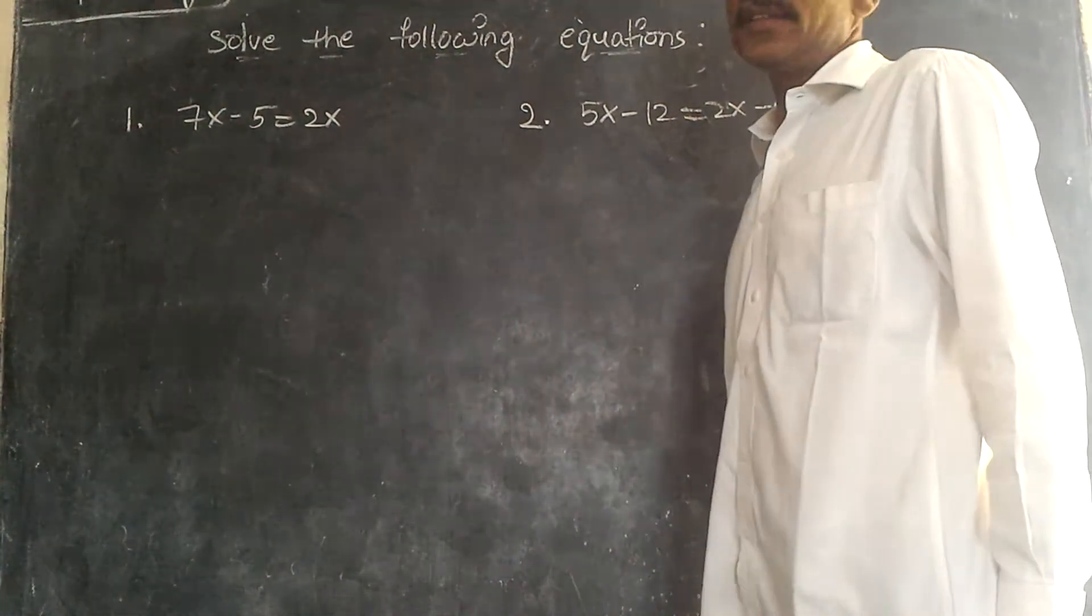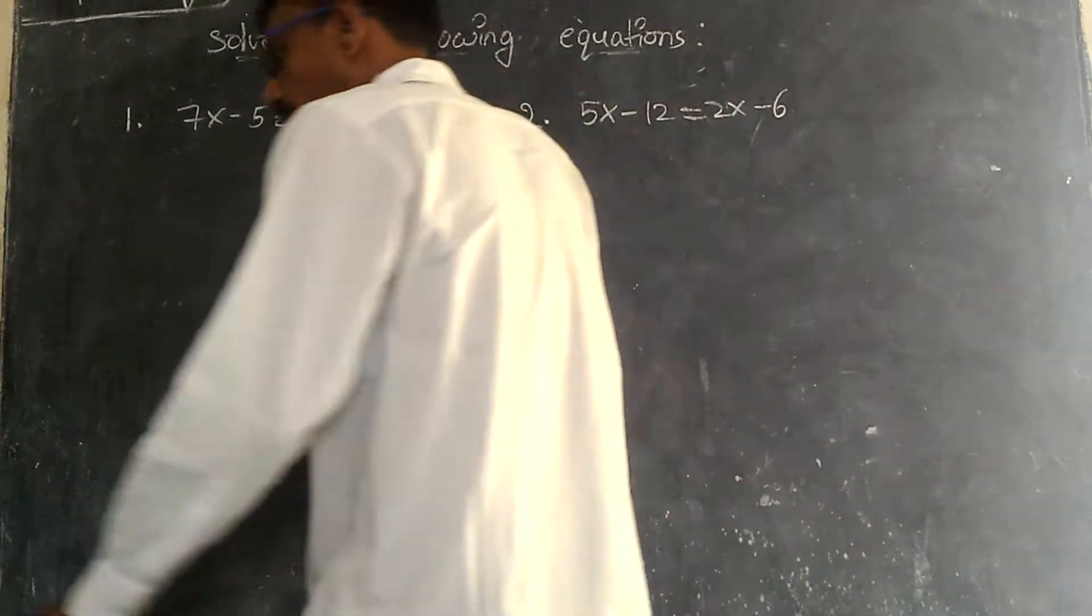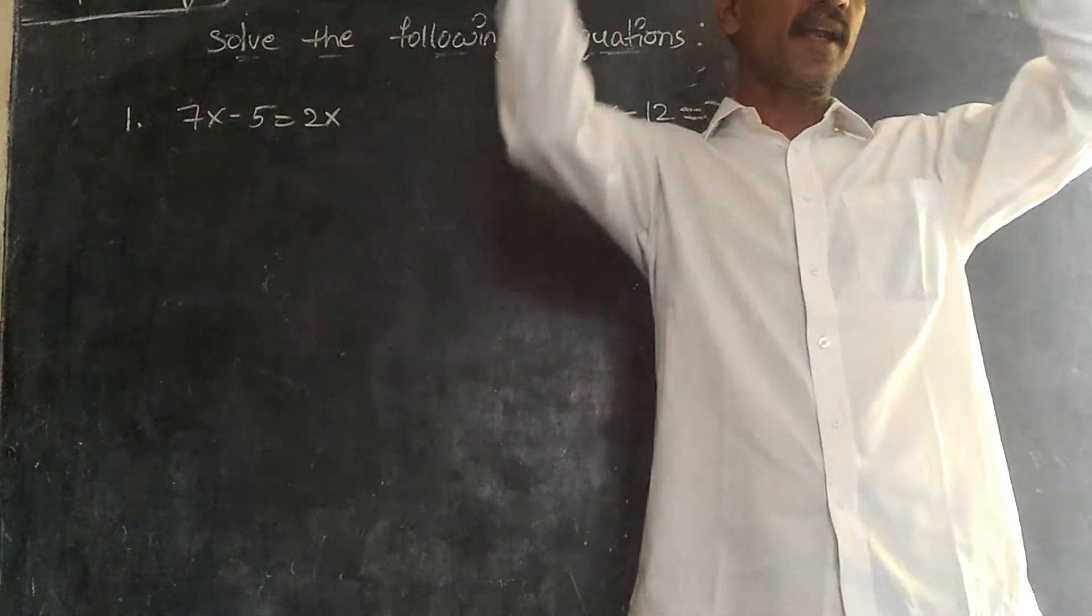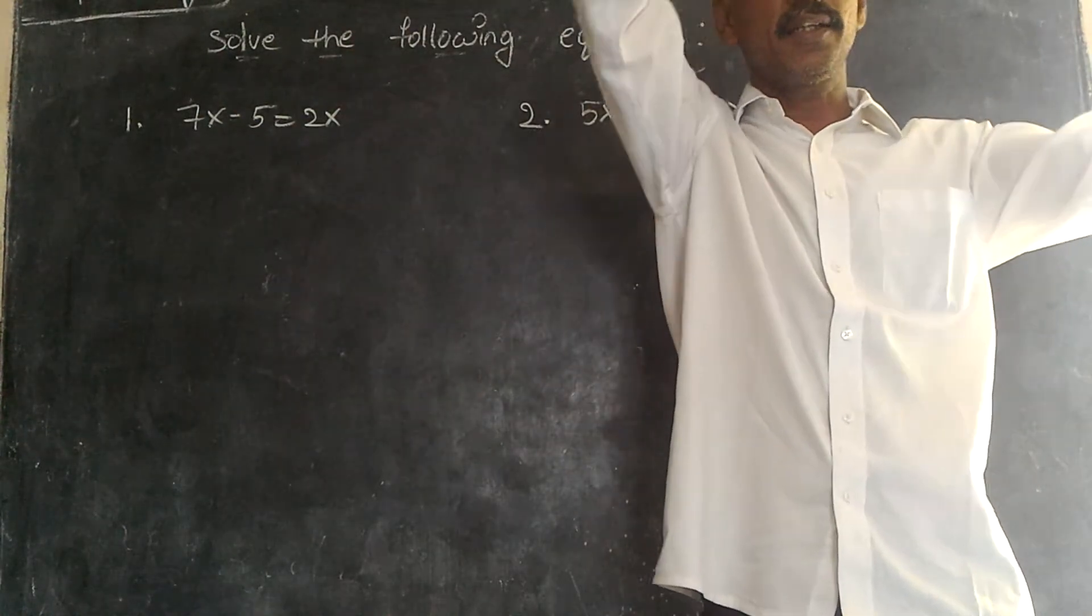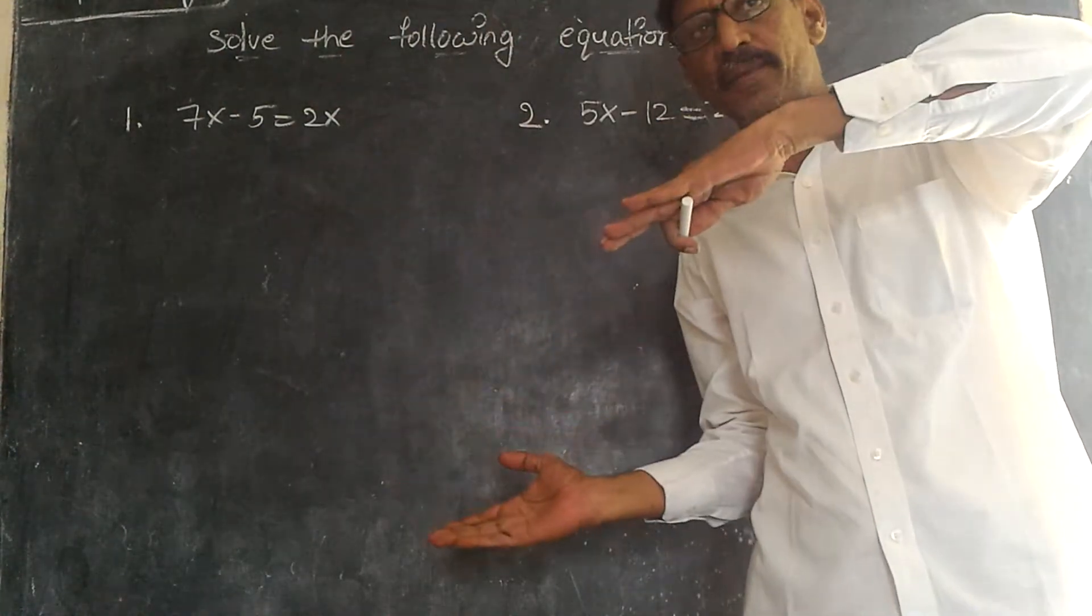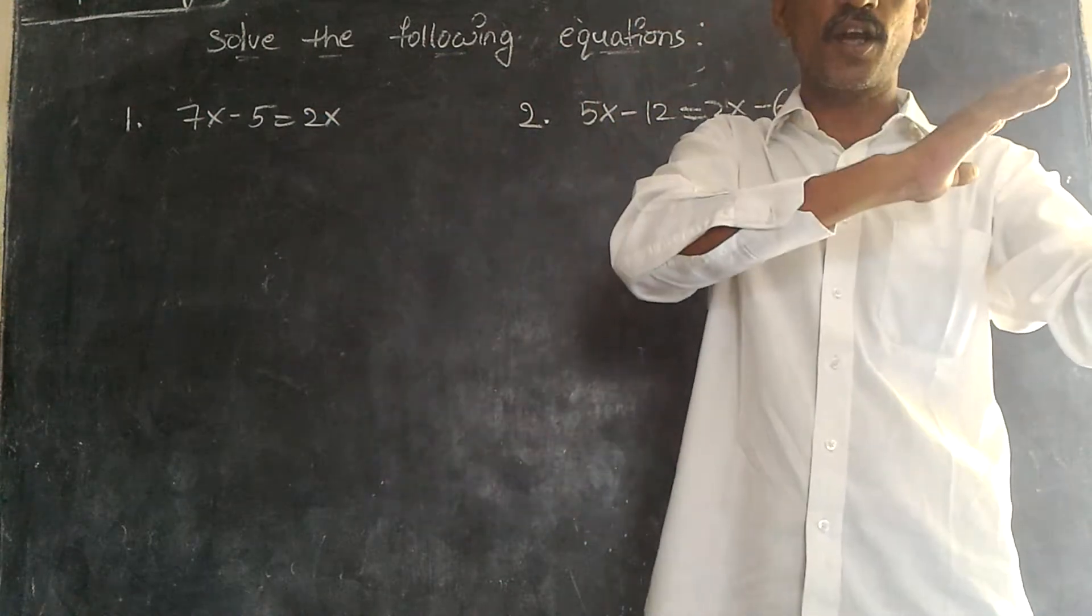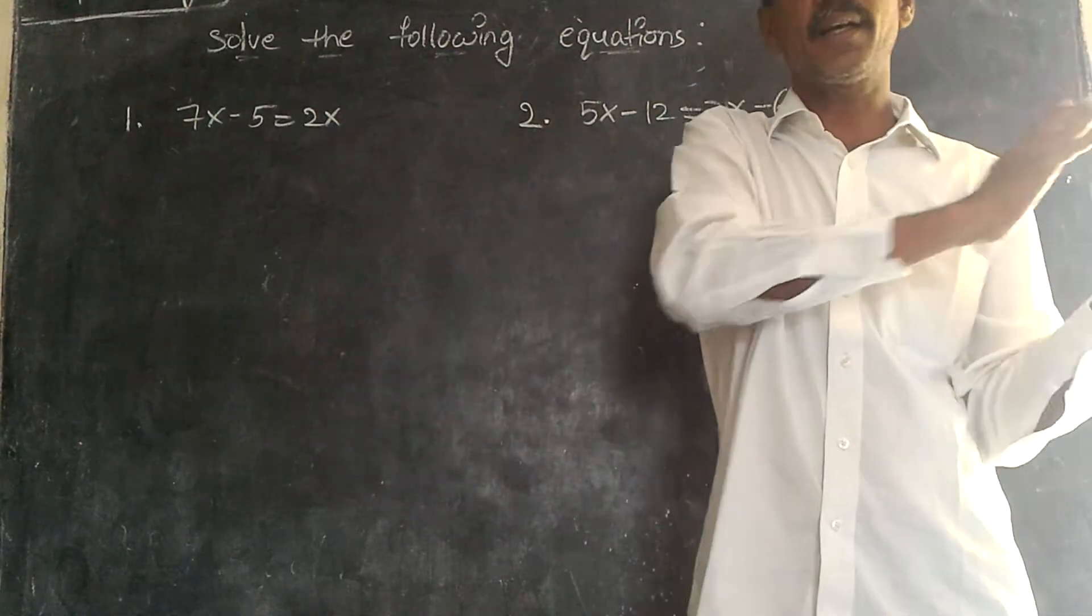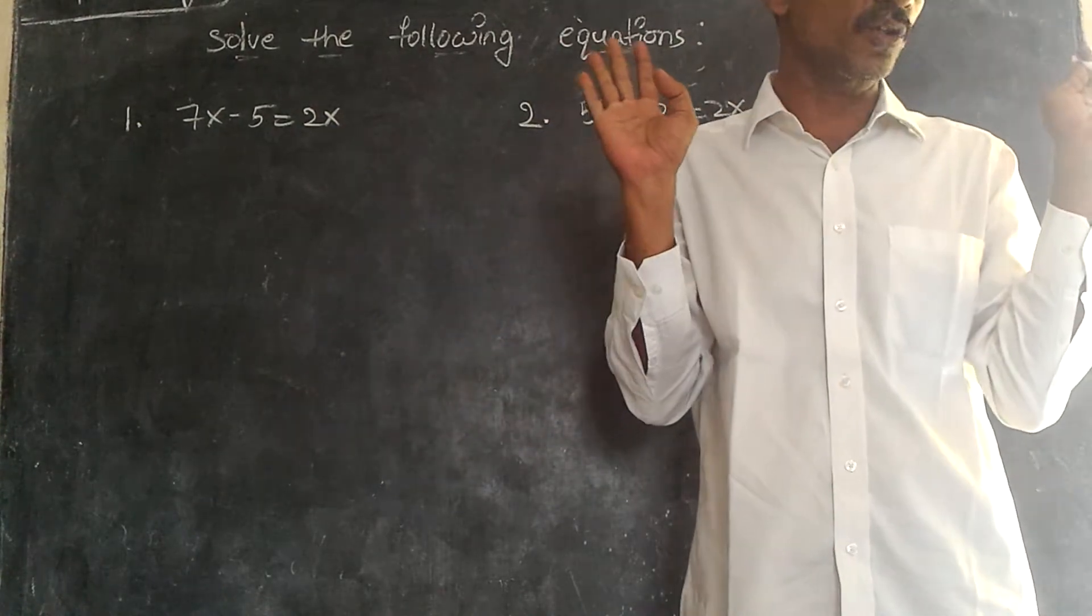Solve the following equation. I already explained the plus quantity becomes minus when we transpose it. At the same time minus quantity becomes plus when we transpose it. Multiplication becomes division and division becomes multiplication. Everybody knows these things.